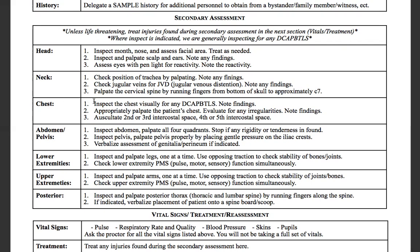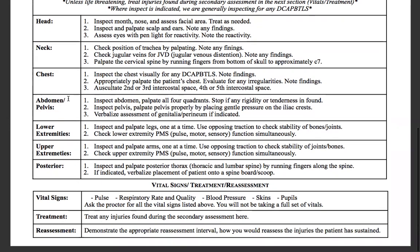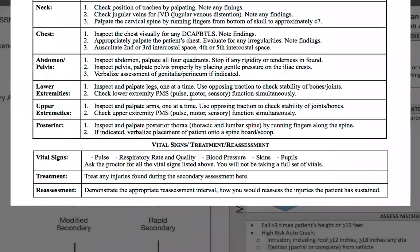For the chest: inspect visually for any DCAP-BTLS, palpate appropriately and evaluate for irregularities, then auscultate at the second or third and fourth or fifth intercostal spaces — posterior lung sounds will be done at the end. For abdomen and pelvis: inspect the abdomen and palpate all four quadrants, stopping if any rigidity or tenderness is found. Inspect the pelvis and palpate by placing gentle pressure on the iliac crest. Verbalize assessment of the genitalia and perineum if indicated.